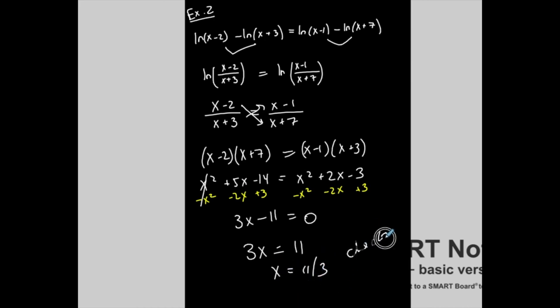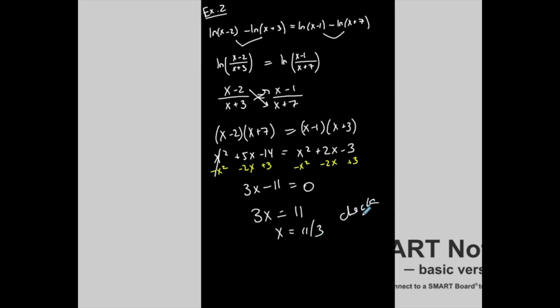But check. Check my solution. 11 thirds is almost 4, right? So if I have something that is almost 4 minus 2 is positive, positive, positive, positive. When I plug it in, I get more positives. This is my solution. And then again, you might be asked to represent it as a solution set. The set contains the solution of 11 thirds.